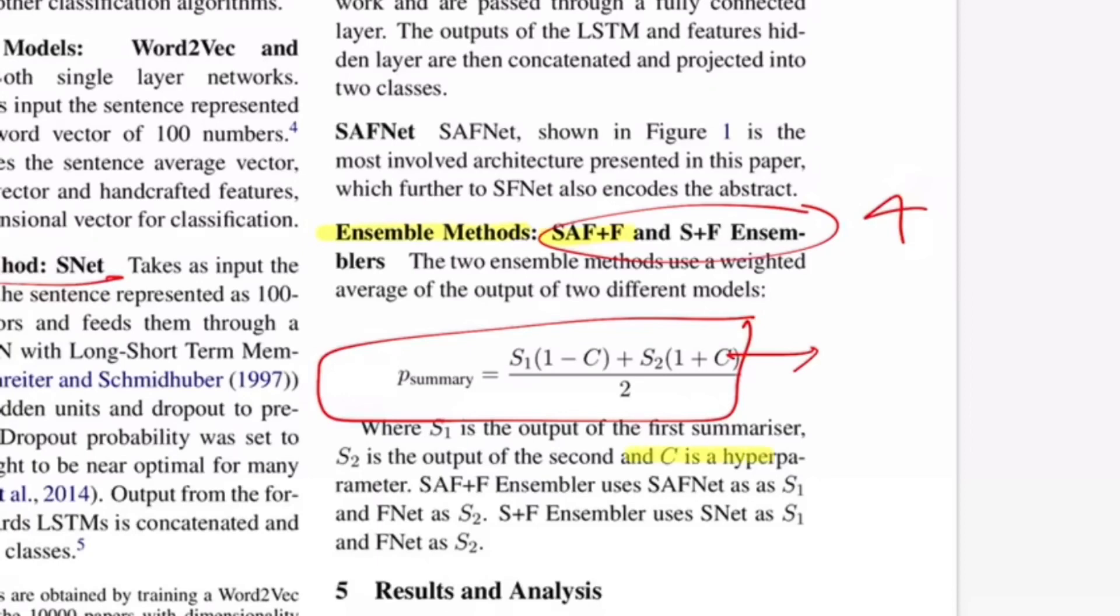They use weighted average from both models to finalize and give the probability whether a sentence should be part of summary or not. They talk about C being a parameter and SAF is an ensemble of SAF-net which is S1 and F-net which is S2. Similarly for S plus F, S-net is S1 and F-net is S2. Since this is a weighted average, C can take a value between 1 and minus 1. If you put 1 at this place, we're only considering S2 for its prediction. If you consider minus 1, then we're just considering S1 for its prediction. For the value of 0, S1 and S2 contribute equally.